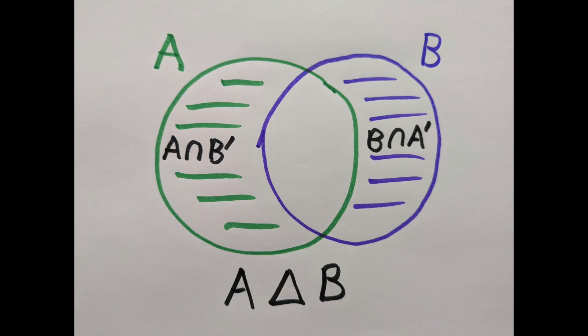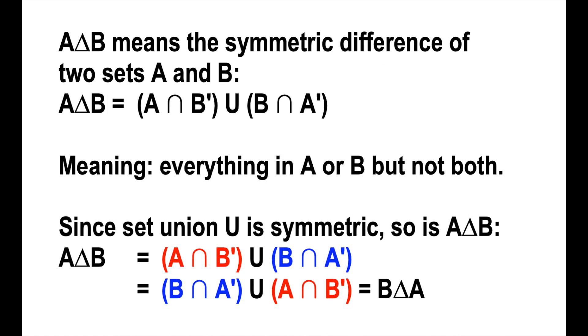That means everything in A or B, but not both. Let's note that since set union U is symmetric, so is A triangle B, because if you just write the definition and then swap the union, you get B triangle A.